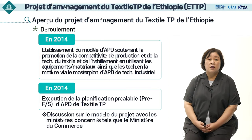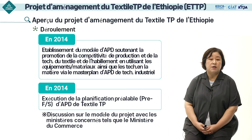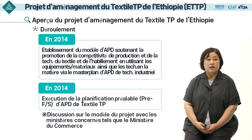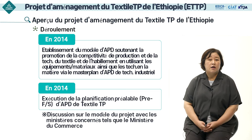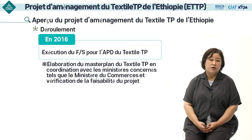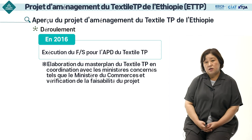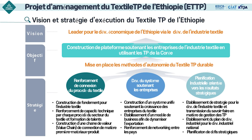En 2014, le modèle d'APD a été établi à travers le Master Plan d'APD. Une étude de faisabilité préalable a été menée en 2014 et le ministère de l'Industrie, l'équipe d'inspection locale et les responsables des ministères concernés du gouvernement éthiopien se sont mis d'accord sur ce modèle de business. En 2016, une étude de faisabilité du projet a été réalisée. Sur la base de ces investigations, le Master Plan a été établi et sa validité a été vérifiée.